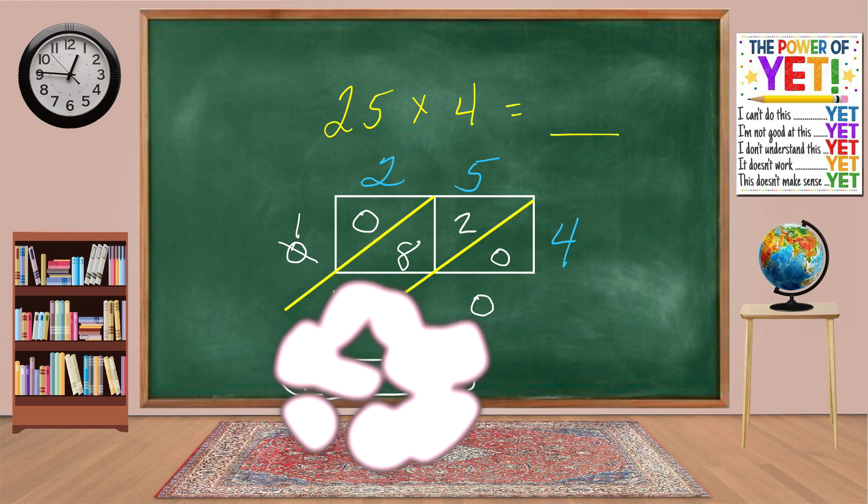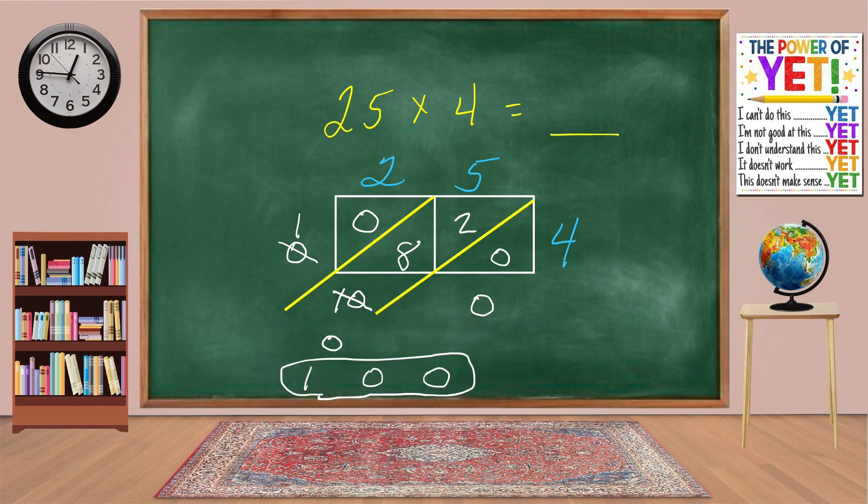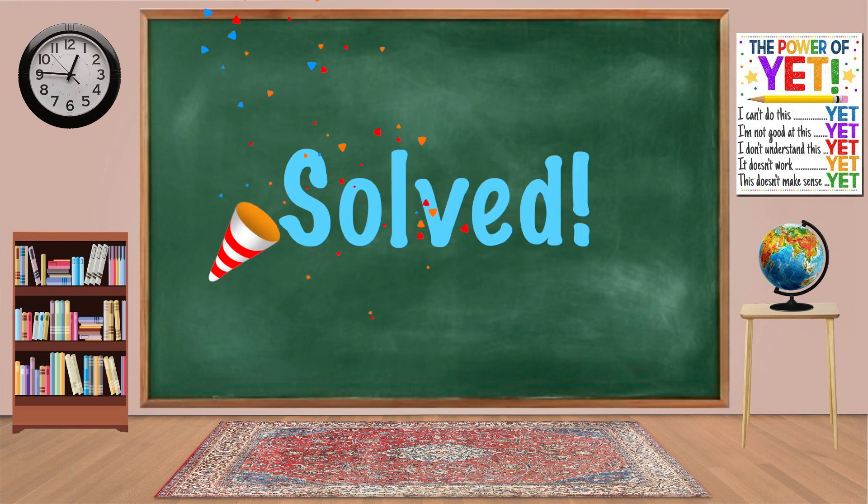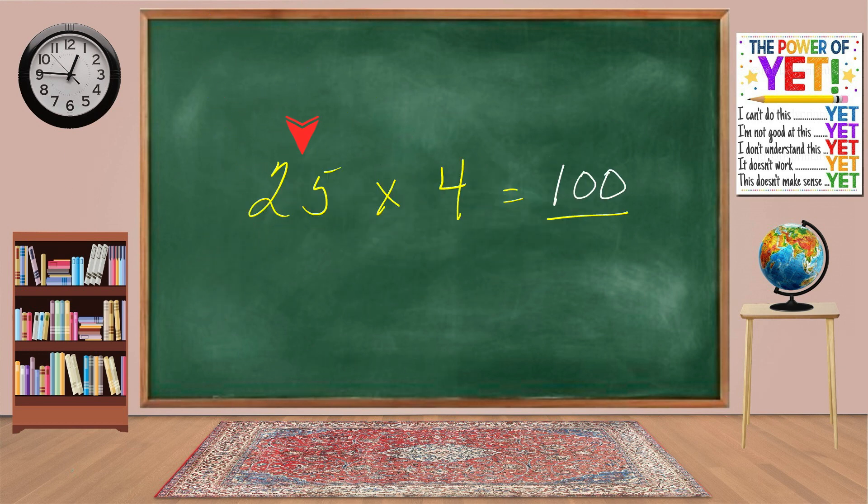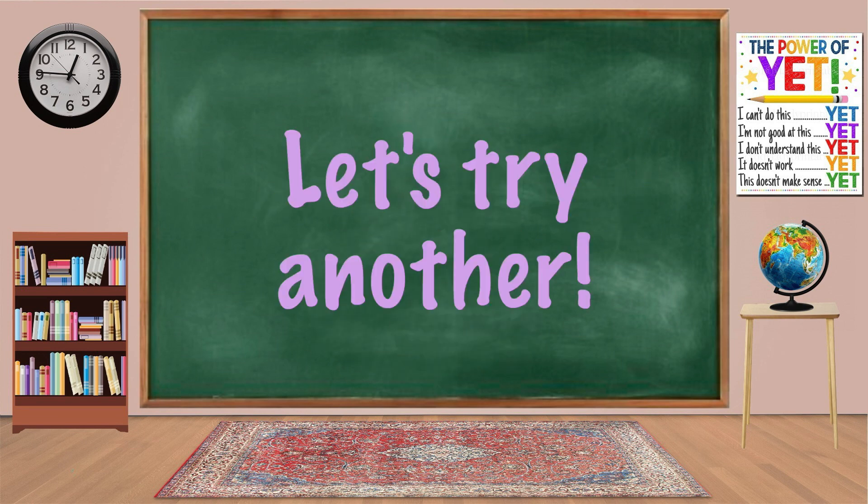Now, we can bring down our 0 in the tens and our 1 in the hundreds. We get the numerals 1, 0, 0, or 100. We've solved our multiplication sentence. 25 times 4 equals 100. You did really well with that. Let's try another.